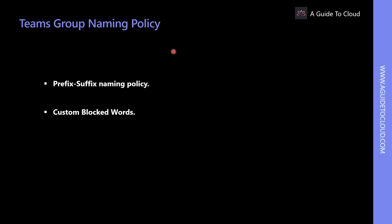Organizations use a group naming policy to enforce a consistent naming strategy for groups created by users. You can use the policy to block specific words from being used in group names and aliases. The naming policy is applied to groups across all group workloads like Outlook, Microsoft Teams, SharePoint, Planner, and Yammer. The naming policy consists of two features: prefix-suffix naming policy and custom block words.